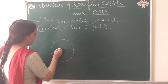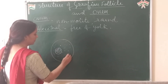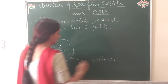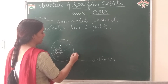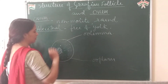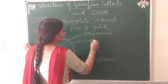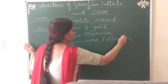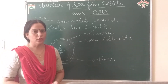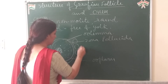Each ovum contains a haploid nucleus and it has abundant cytoplasm. This cytoplasm is called ooplasm. The haploid nucleus is surrounded by a membrane called oolemma, which is equal to plasma lemma. It is further surrounded by a thin inner membrane called zona pellucida. Zona pellucida is thin and continuous and it consists of some receptors called ZP3 receptors, which help in the process of fertilization and the species-specific recognition of ovum.